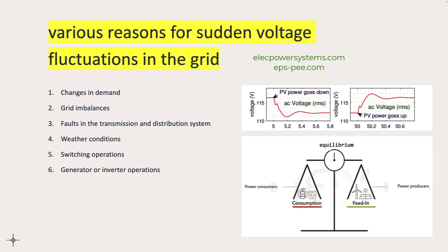Weather conditions are another factor. Severe weather events like storms, lightning strikes, or heavy winds can impact power lines and substations, leading to voltage fluctuations. These weather-related disturbances can disrupt the stability of the grid and cause voltage variations.